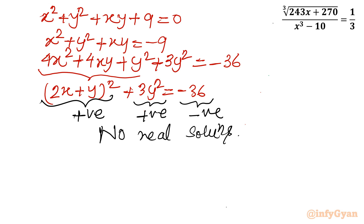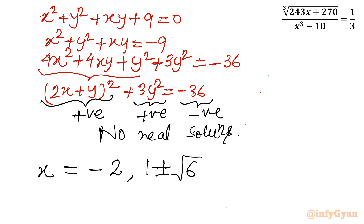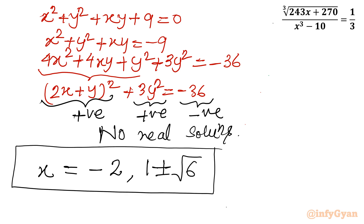So the conclusion: we have calculated three real solutions. x = -2, and x = 1 + √6 and x = 1 - √6. I hope this video will be meaningful to you. Do not forget to like, share, and subscribe. Bye bye till next video. Good luck and take care of yourself.